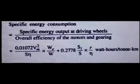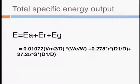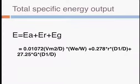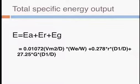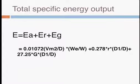Specific energy consumption: the specific energy consumption can be given as the specific energy output at the driving wheels divided by the overall efficiency of the motors and gearing. This can be obtained using the simple equation of efficiency, where efficiency equals output divided by input. So the equation of specific energy consumption will be output divided by efficiency, and this equation is divided by the overall efficiency.